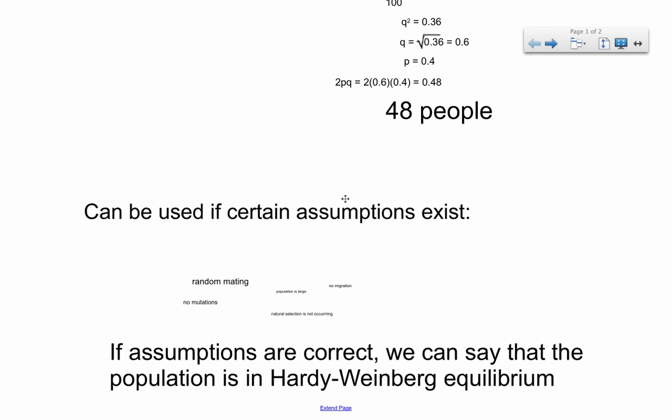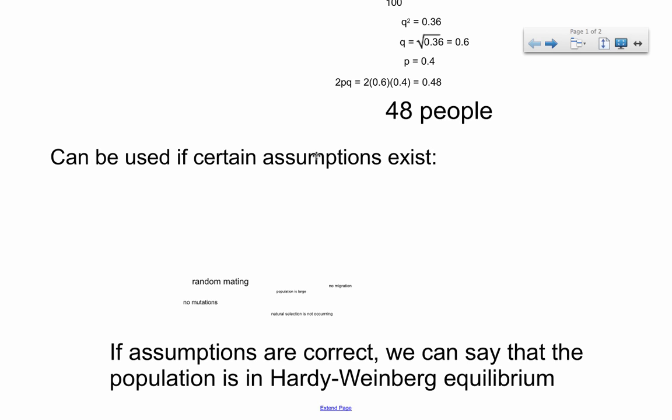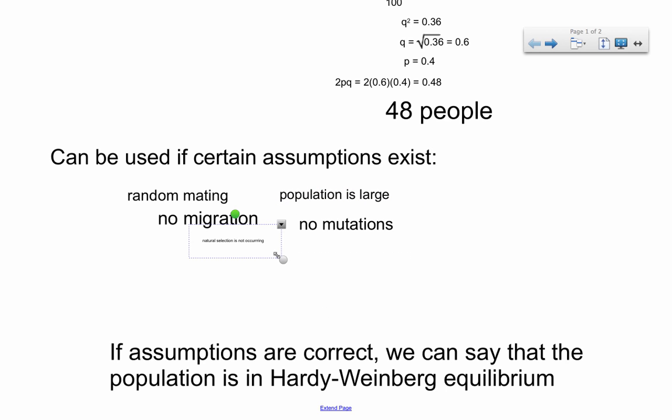So one final thing is that Hardy-Weinberg assumes that certain things are happening. And if things are not fitting Hardy-Weinberg, then you can assume that one of these things might be kind of strange. So random mating, population is large enough that there's going to be no kind of inbreeding effects, no migration, no new individuals, no new frogs are moving into this particular pond, that there are no mutations actually happening, and that natural selection is not occurring.